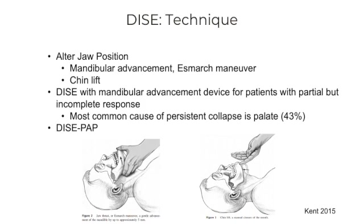You don't want to advance the jaw excessively because you're trying to mimic something the patient could tolerate all night. I'll usually have my anesthesia colleague do this and ask them to line it up so the incisors meet, and I'll check with my finger to confirm. I also do a chin lift — close the mouth and extend the neck a bit — which can make a significant difference for some patients, simulating neck extension and nasal breathing with mouth closure. Additionally, if a patient has a mandibular advancement device that is beneficial but they still have residual OSA, you can actually have the MAD in at the time of DICE to see where the residual obstruction is. Studies show it's primarily palate obstruction if they're still having OSA with a partially successful MAD.